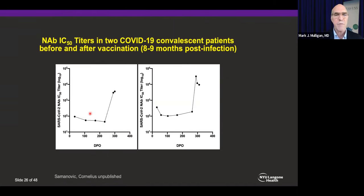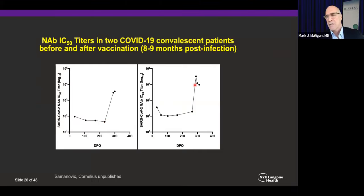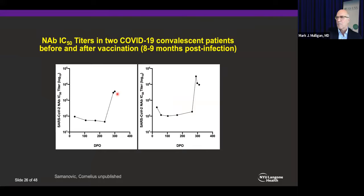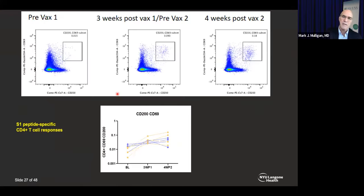Here are two individuals who had COVID and were followed for 8-9 months before getting their vaccine. These experienced individuals show that the antibody response to vaccine is actually much higher — perhaps IC50 of 50,000 — than what they had in response to the virus at weeks 3-4 after onset of symptoms, which was several thousand. So vaccination following infection produces stronger responses than the initial infection alone.